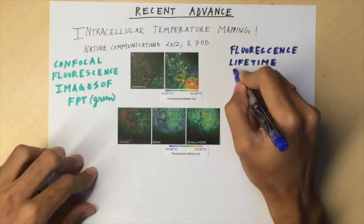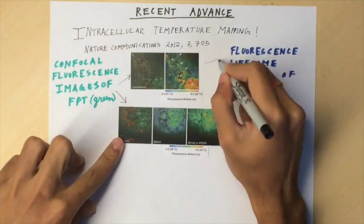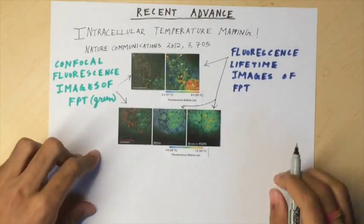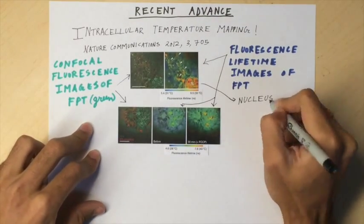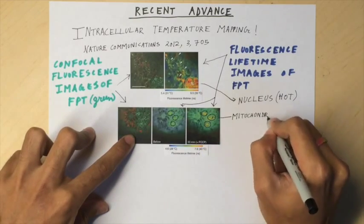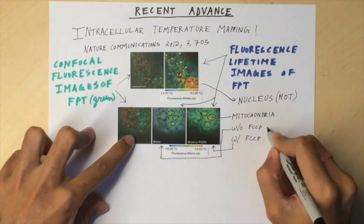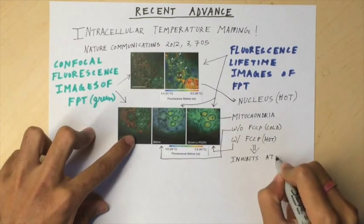As evident from the pictures, the temperature distribution within a COS7 cell indicates that the nucleus is at a higher temperature than the cytoplasm. Local heating around the mitochondria is also observed after treating it with 4-trifluoromethoxyphenylhydrazone or FCCP, which inhibits ATP synthesis.